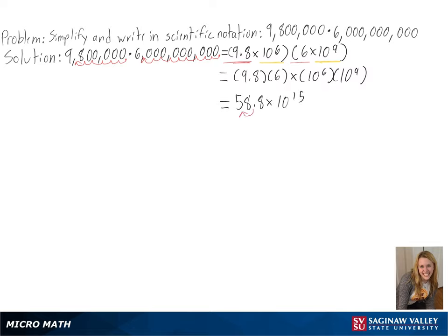Now we can rewrite the new number in scientific notation. Since we are moving the decimal to the left again, we will be multiplying 5.88 by 10 to the positive first power. And then combining the powers of 10, we get 5.88 times 10 to the 16th power as our final answer.